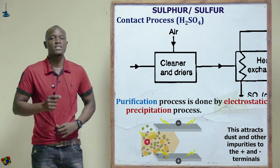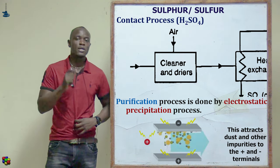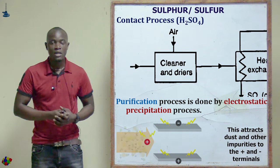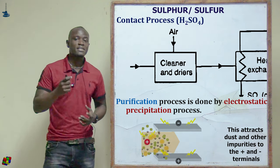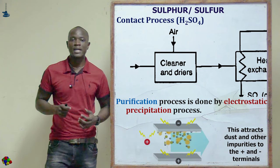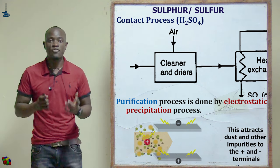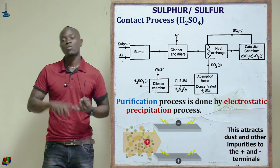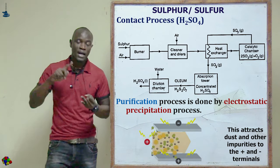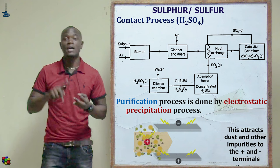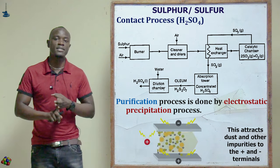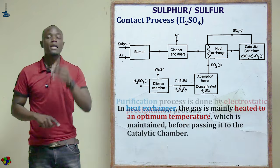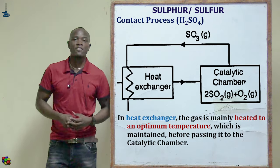Poisoning the catalyst will reduce its efficiency and also reduce the yield produced. The gas is then passed through concentrated sulfuric acid to remove water vapor from the atmosphere. So in the purification chamber, we are removing dust, other impurities, and water vapor.